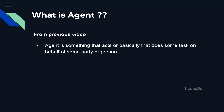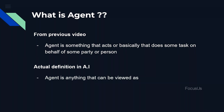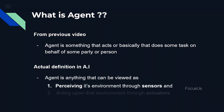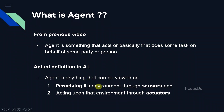But our education system wants a more complicated and exact definition, so let's start with that. An agent is anything that can be viewed as perceiving its environment through sensors and acting upon the environment through actuators. So our agent must perceive information from the environment through sensors and act upon that environment through actuators.